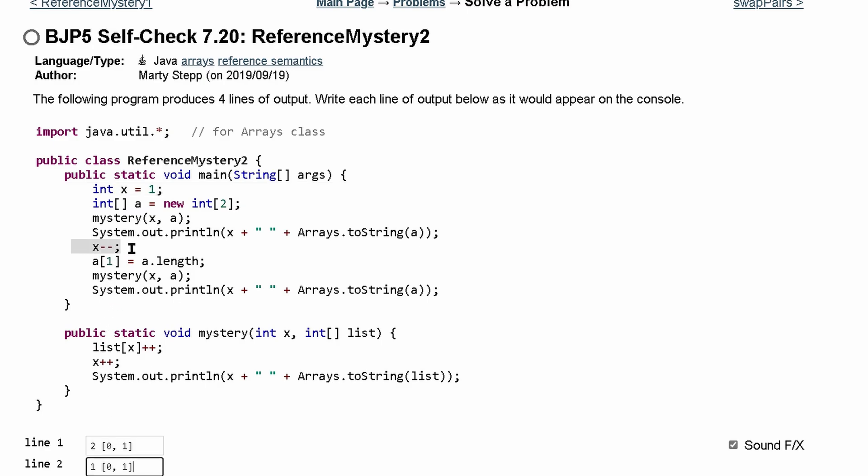We then decrement our x. We set the first index of our array equal to the array length, which is 2. And then we pass this to our mystery.